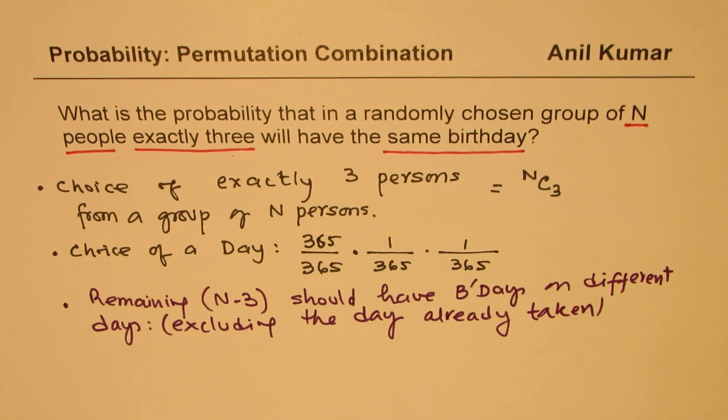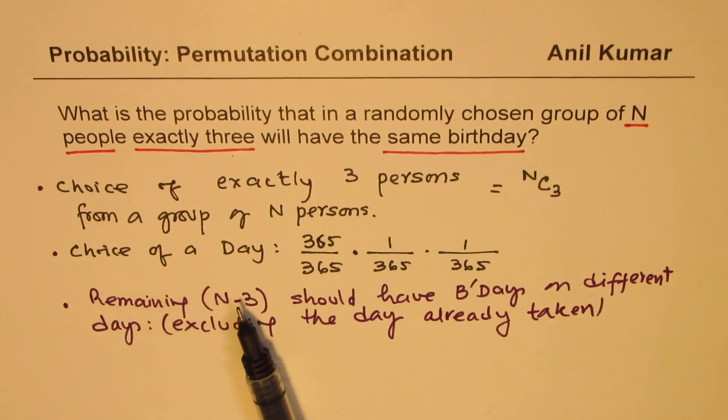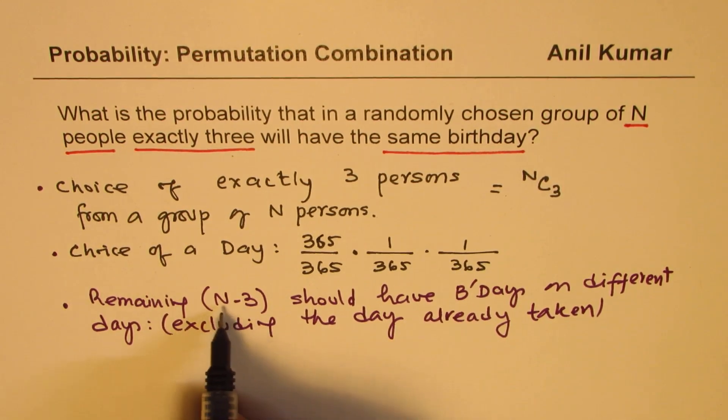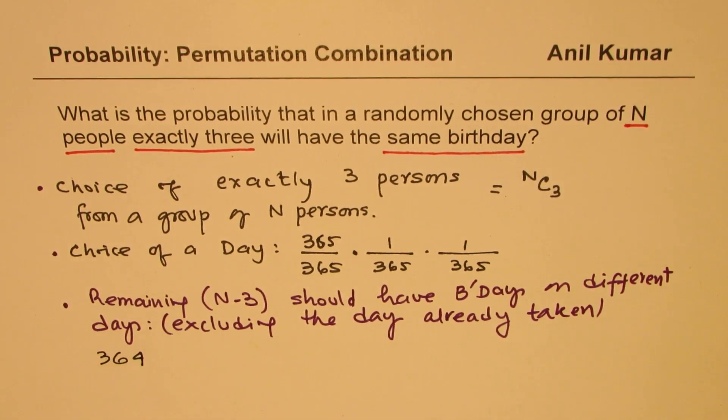So that is, now, we have to look for the other people in that group, which is n minus 3 people. As far as the probability is concerned, for all of them, denominator is to be 365, but the numerator, for the first person out of that n minus 3, it could be 364 days. So 364 over 365 is the probability.